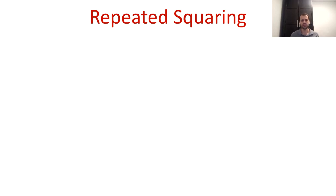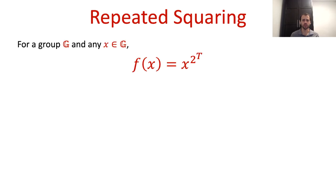So we are interested in more structured constructions of delay functions which may enable extensions to timelock puzzles and to VDFs. Luckily, this is where the repeated squaring function comes into the picture. The repeated squaring function is defined with respect to a group G. Given the delay parameter t and the group element x as input, the output of the function is x raised to the power of 2 to the t.